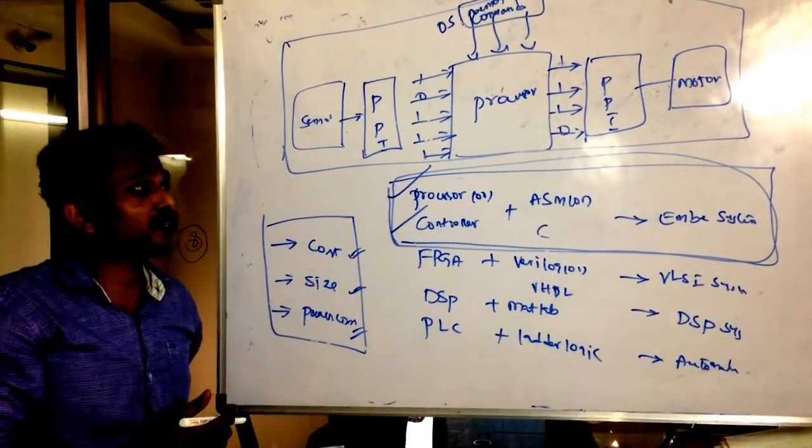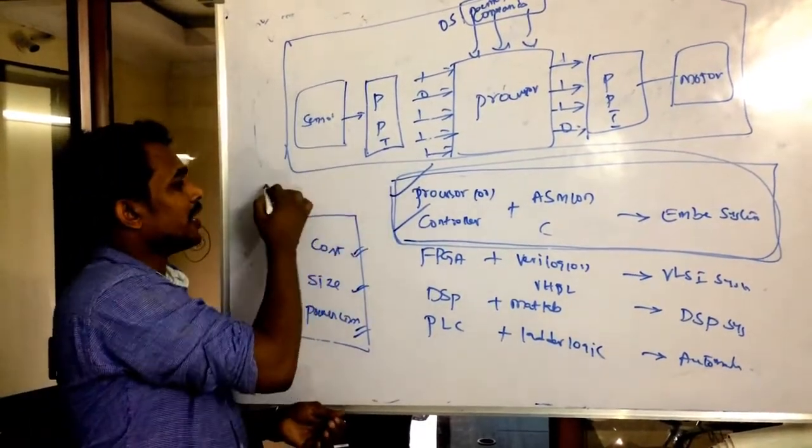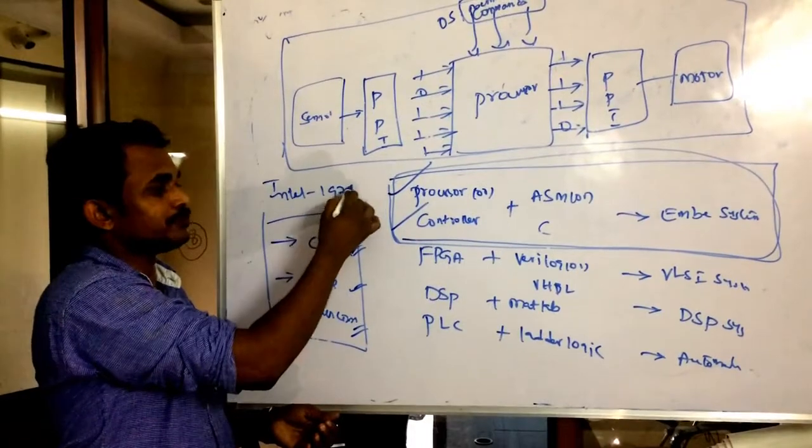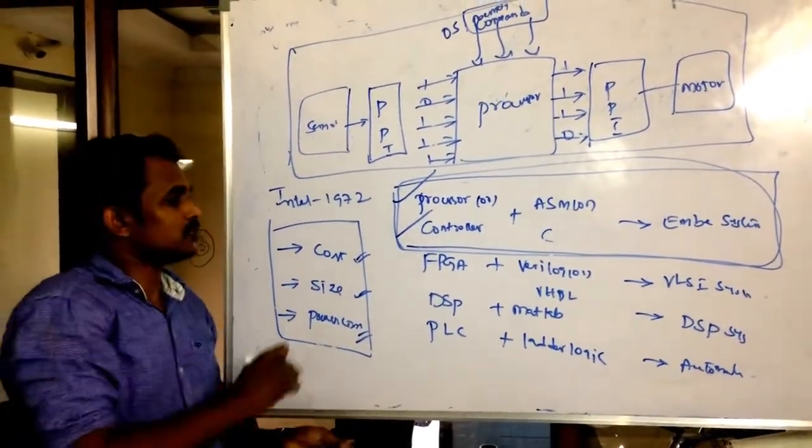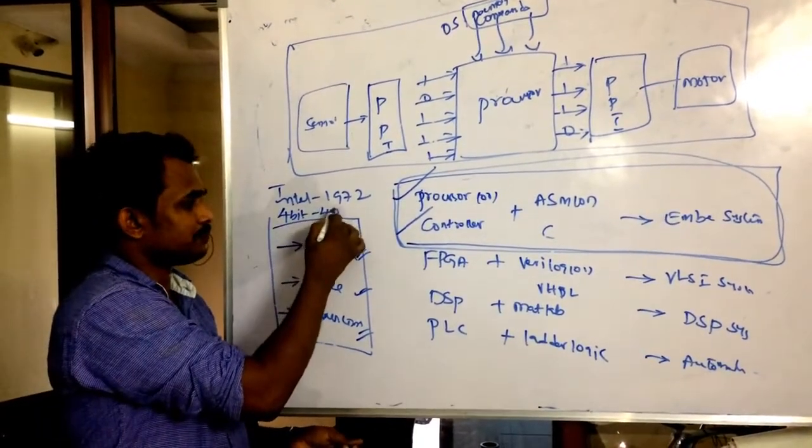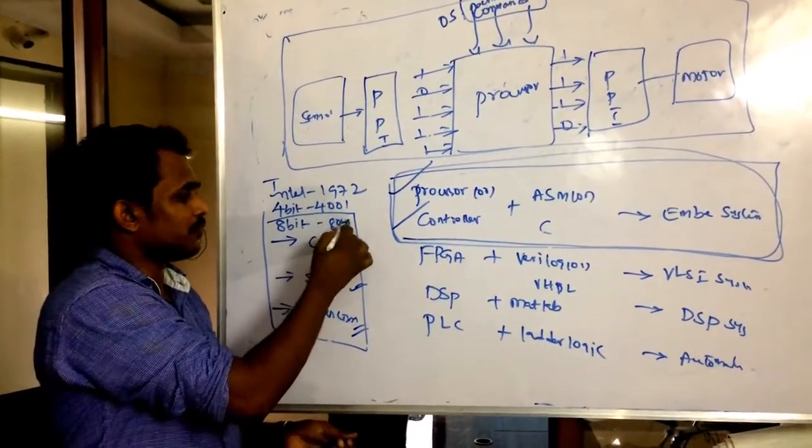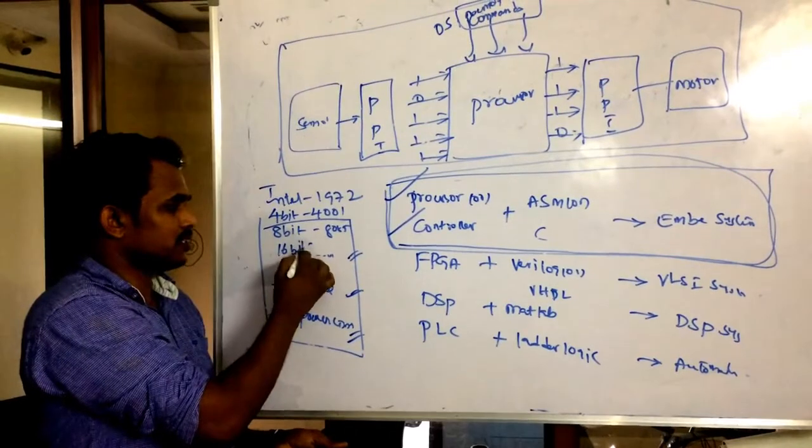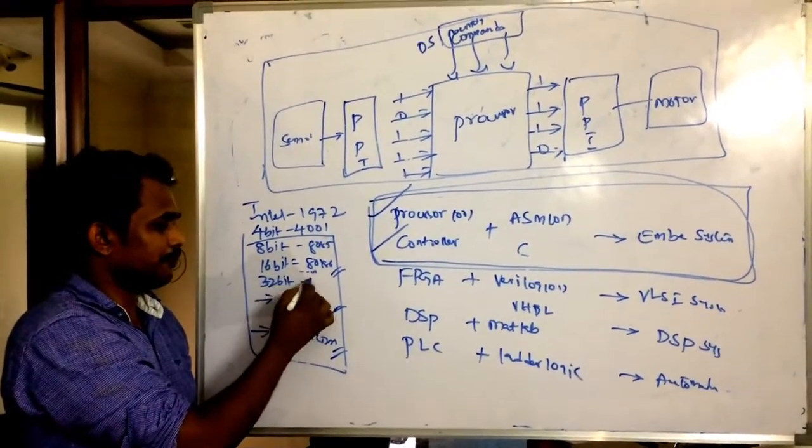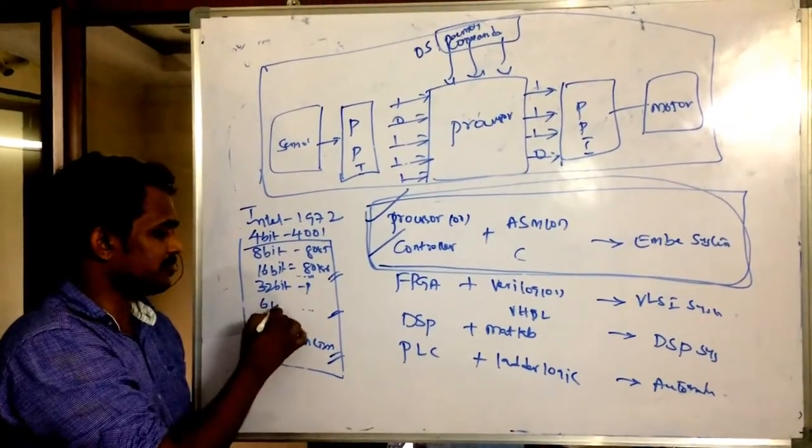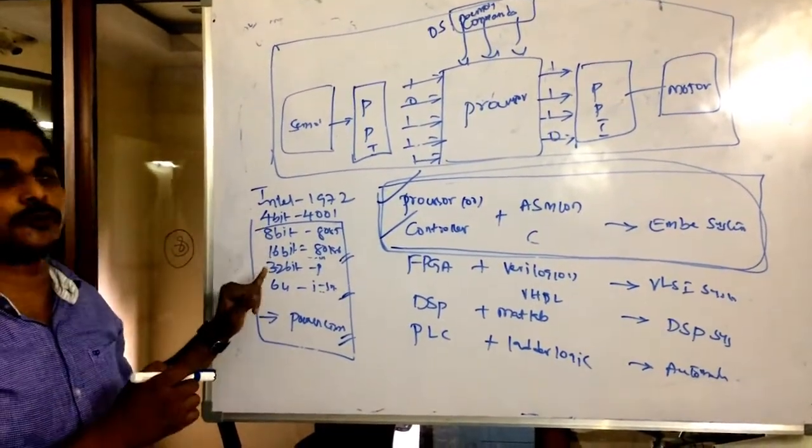This processor, who is the inventor? It was introduced by Intel Corporation in 1972. They introduced the first microprocessor with 4 bit capacity, the series 4001. Next they introduced 8 bit which is 8085, then 16 bit which is 80186, 286, and 32 bit Pentium, and 64 bit I series. These are the generations and advancements towards processors.